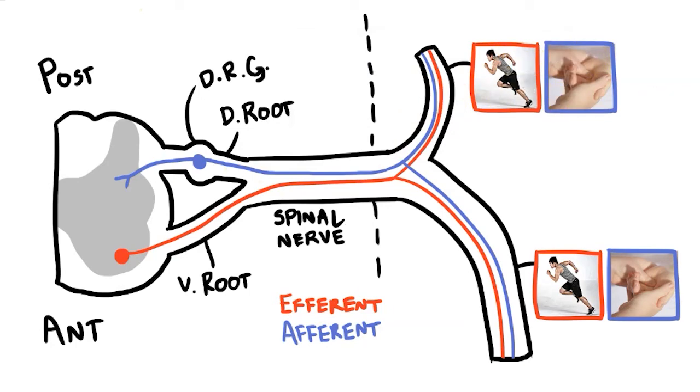Now what about damage at the proximal end in the roots instead of the rami? If we damage the ventral root we'll lose all efferent innervation beyond that point. So both rami lose their motor supply but will have no loss of sensation.